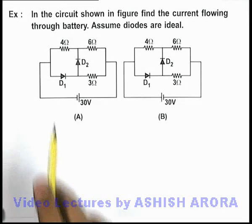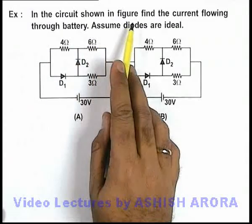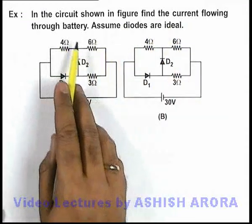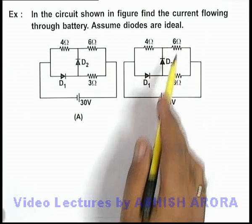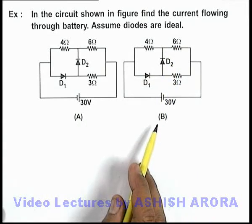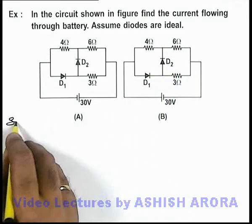This example says, in the circuit shown in figure we are required to find the current flowing through the battery. We need to assume the diodes are ideal. There are two situations given to us, let's discuss both of these one by one.